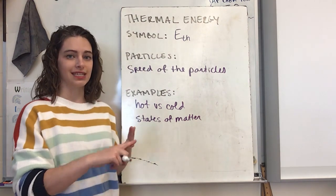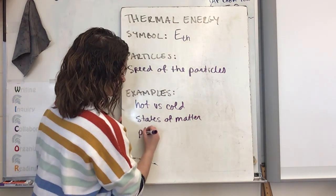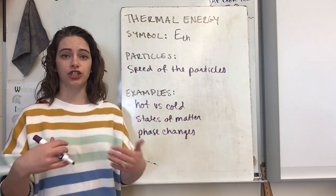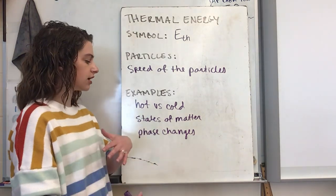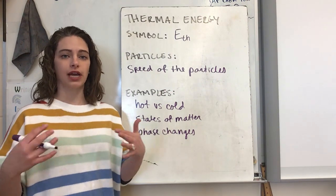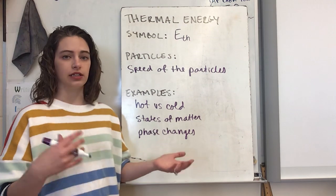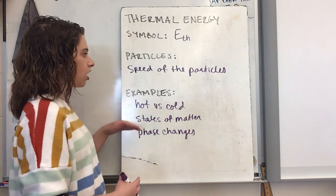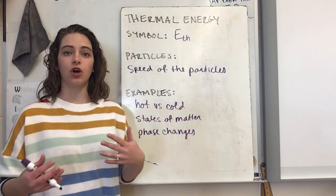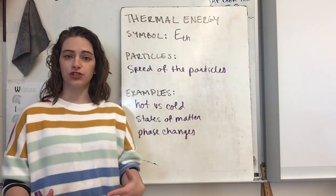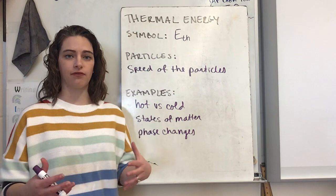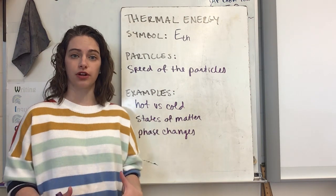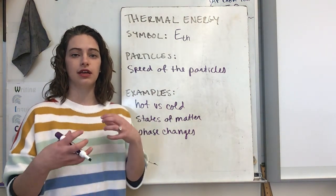Our states of matter are solids, liquids, and gases, and thermal energy affects our phase changes — all the changes between states of matter. Going between a solid and a liquid is freezing or melting. Going between a liquid and a gas is evaporating or condensing. Going between a solid directly to or from a gas is sublimation or deposition depending on the direction. All of those changes relate back to thermal energy and how fast those particles are moving. The faster they're moving, the more spread apart they'll be. The colder they are, the slower they'll move, and they'll be closer together in more condensed states of matter.